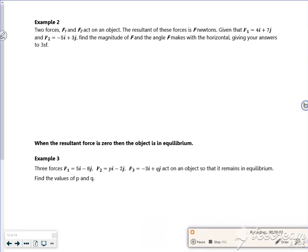Right then, so let's have a look at this one. It says two forces, F1 and F2, act on an object. The resultant of these forces is F. Given that F1 is 4 across 7 up, so F1 is (4, 7), and F2 is (-5, 3), find the magnitude of F and the angle F makes with the horizontal.